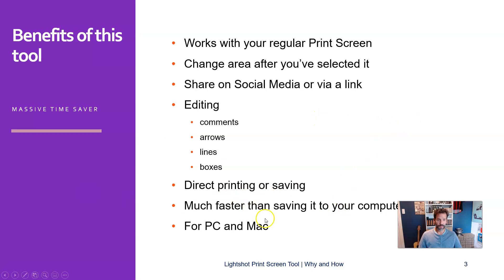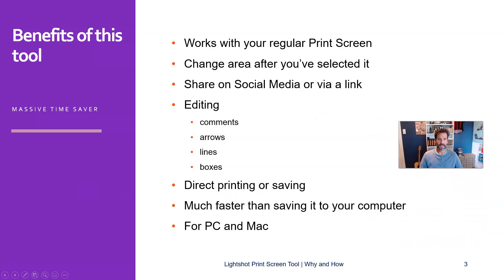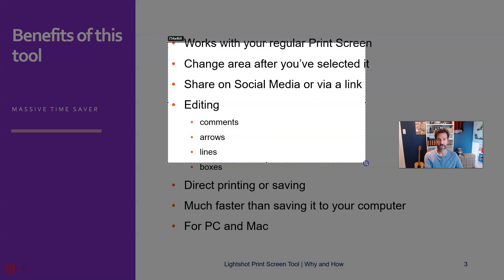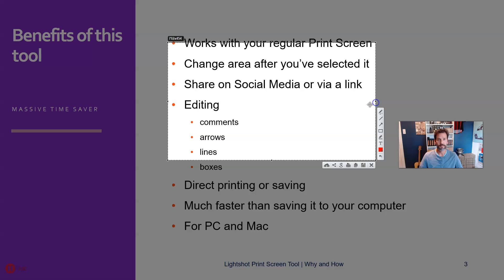What is very convenient is that you can change the area after you've selected it. There is also a Windows 10 default print screen application, but after you've selected the part of the screen you want, it's not possible to change it anymore — you have to re-select it. In LightShot, you can change this area after you've selected it. I'll show you — it's like this, but I want it a little bit wider, so I do it like that.